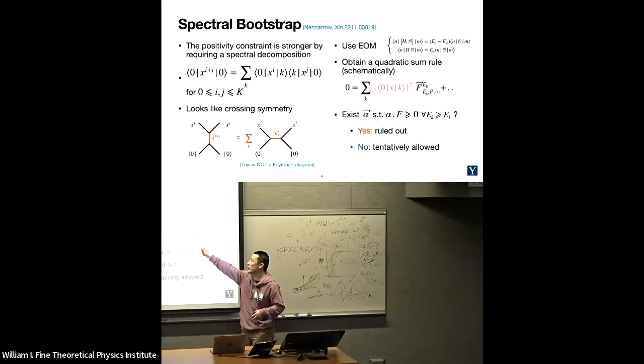This gives us something that looks like a crossing symmetry if people are familiar with conformal bootstrap. We use the equation of motion to limit down the possible objects that can appear in this equation, and it turns out that we can write everything in terms of a quadratic sum rule. We have some matrix element, some off-diagonal matrix elements squared, multiplying some unknown factors summed over different sectors. Schematically we get a sum rule in terms of square of a matrix element multiplying norm square matrix element multiplying some known factor in terms of the energy eigenvalue.